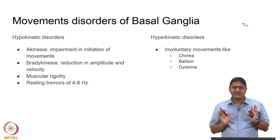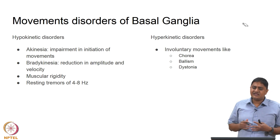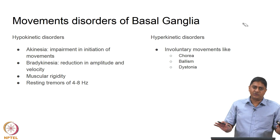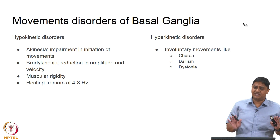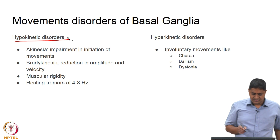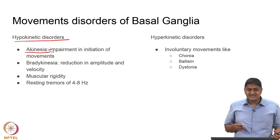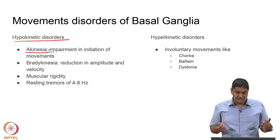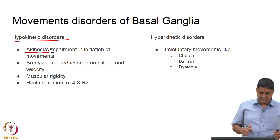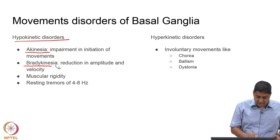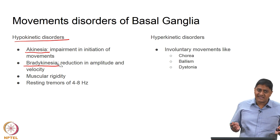Movement disorders of the basal ganglia can be classified into two types. One is the hypokinetic type — when the patient wants to perform a movement but is not able to. There are different manifestations: akinesia is the inability to initiate or start a movement, for example the freezing of gait episode where the patient is not able to take the first step. Bradykinesia refers to general slowness, a reduction in amplitude and velocity of movement.